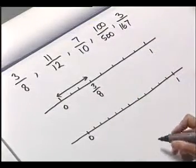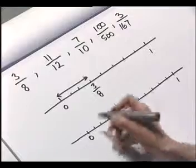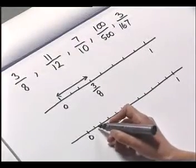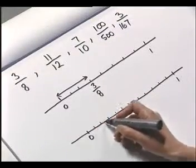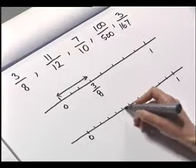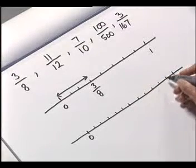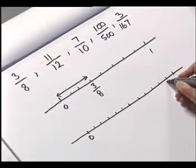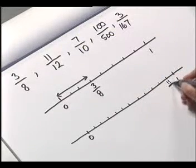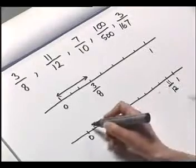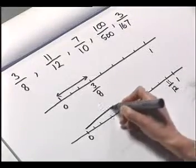Okay, so we want eleven of them, so we need to count eleven — one, two, three, four, five, six, seven, eight, nine, ten, eleven. So our eleven twelfths is represented there.